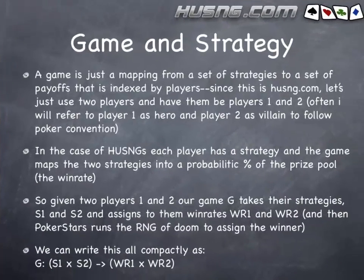Let's talk about some basic definitions. A game is a mapping, or a type of function, from a set of strategies to a set of payoffs, indexed by players. We have some number of players and all of them pick strategies. After they've all picked their strategies, we figure out who won or how much each person won — those are the payoffs linked to each player's strategy choice.